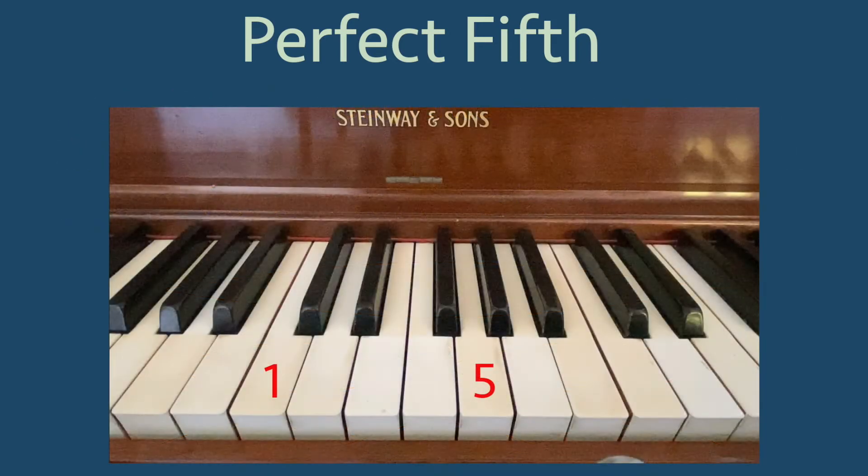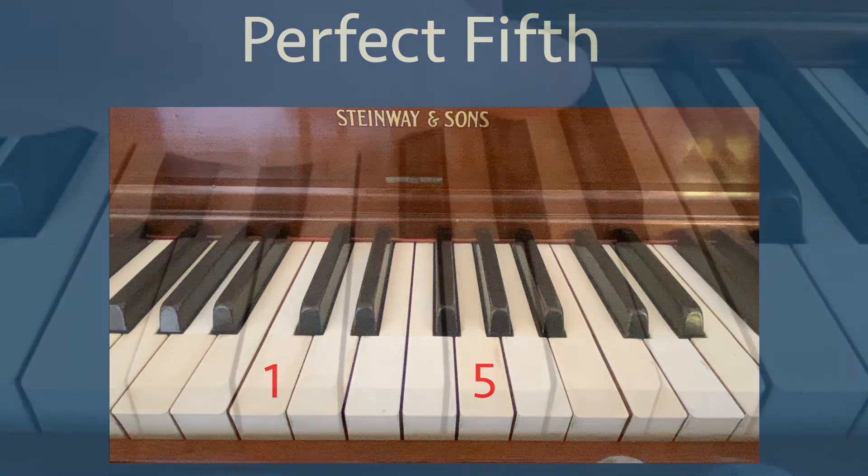You can hear a perfect 5th on a piano by starting at middle C, calling it note 1, and counting up to the white keys to G, note 5. If you play the C, the perfect 5th G, in the octave above C, then you'll hear the three notes we've described so far.